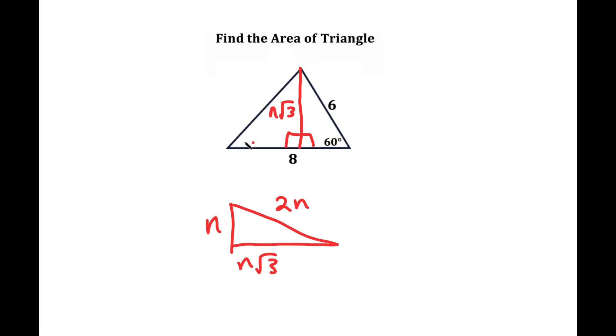And notice how we have a 60 degrees right here and a 90 degrees right here. So in this case, well, what is n? n is going to be 3 because we can use, we have 60 degrees right here. So we can use some trigonometric identities to find that this is 3.